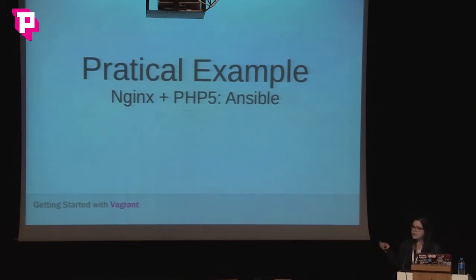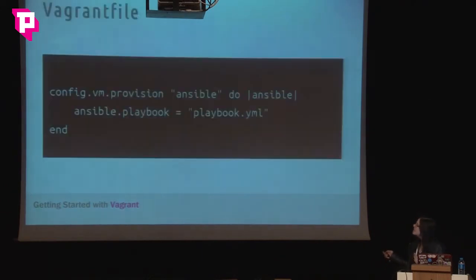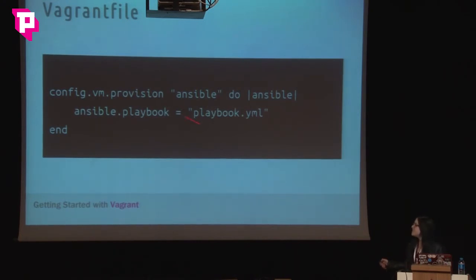Now I'm going to show a practical example using Ansible — installing Nginx and PHP 5-FPM. First, the Vagrantfile: we need to add the provision definition declaring that we want to use the Ansible provisioner and defining the path for our playbook.